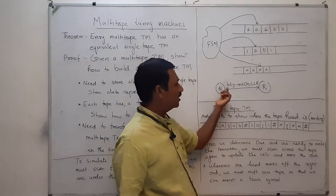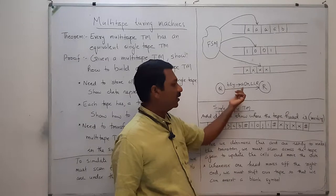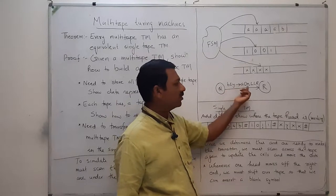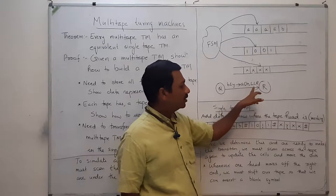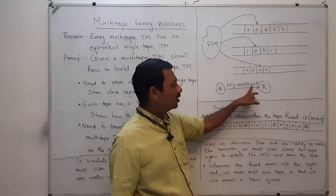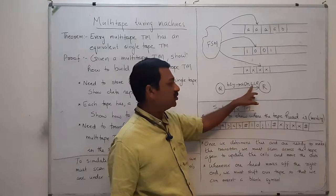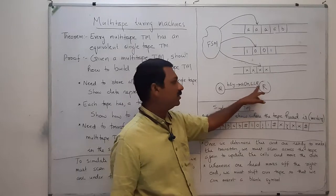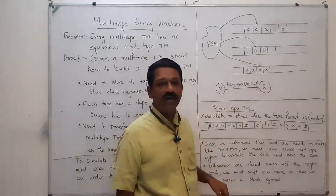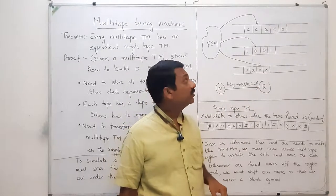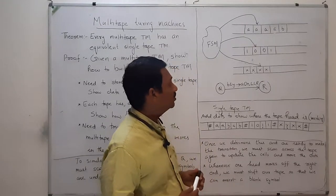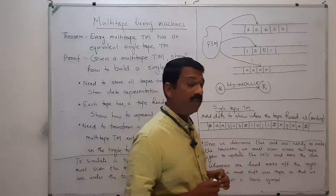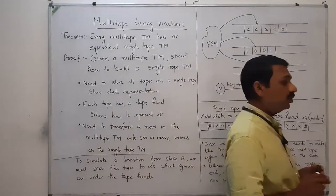So if the current inputs are B, 1, and Y, those will be replaced by A, 0, and X. The move of the first tape head is towards the left, the second is towards the left, and the third is to the right. That is the move of a multi-tape Turing machine.